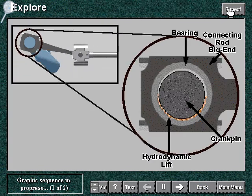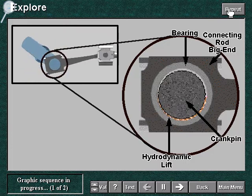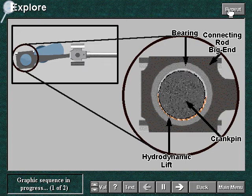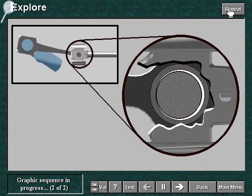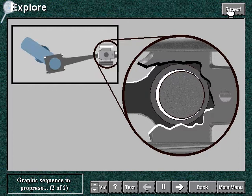In main and big end bearings, the pin always makes a complete revolution. This allows hydrodynamic lift to take place. In small end bearings, however, the crosshead pin only makes oscillations. The lack of complete rotation makes the conditions less favorable for hydrodynamic lift.